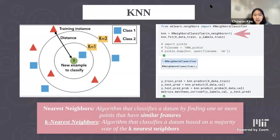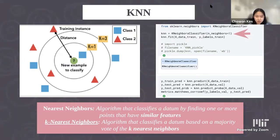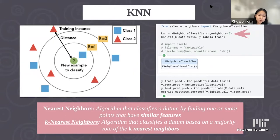K-Nearest Neighbors is an algorithm that classifies a datum by finding points with similar features, classifying based on a majority vote of the K nearest neighbors. If K equals one, the algorithm classifies as a blue square; if K equals three, it classifies as a red triangle because red triangle is the majority of three nearest neighbors. After trying multiple values, five was the optimal number of nearest neighbors, producing the highest accuracy.